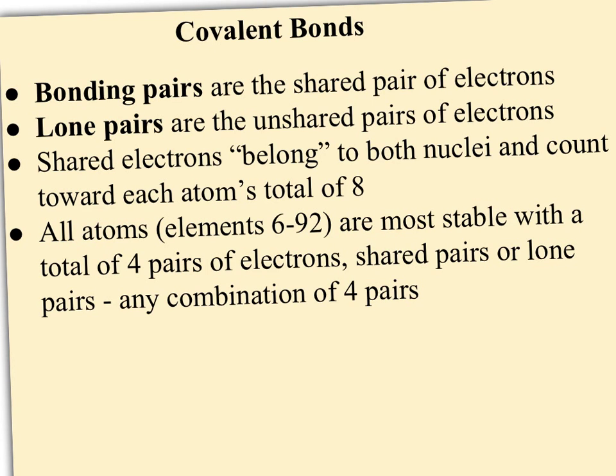Two terms you need to know about covalent bonds are bonding pairs and lone pairs. Bonding pairs, or shared pairs, are the pair of electrons that are bonding or being shared between the two atoms. Lone pairs are any unshared pair of electrons around each atom. Shared electrons, or bonding pairs, belong to both atoms — both nuclei are attracting them and keeping the two atoms physically close together.